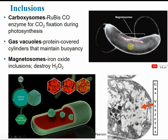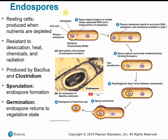Magnetosomes are iron oxide inclusions in some bacteria that destroy hydrogen peroxide. Endospores are considered resting cells, generally produced only when nutrients are depleted. When conditions are rough — desiccation, heat, chemicals, radiation — cells can make endospores that are very resistant to environmental factors. It's like little bacterial seeds; some seeds can be thousands of years old and still germinate and grow new plants. Endospores are typically produced by Bacillus and Clostridium species. Sporulation is the process of endospore formation; germination is when the endospore returns to the vegetative state.